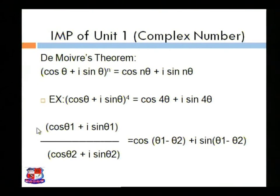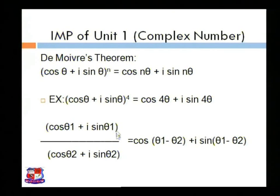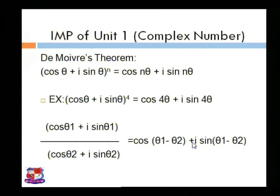If we have division form: (cos theta 1 plus i sin theta 1) divided by (cos theta 2 plus i sin theta 2), we subtract the real part angles and imaginary part angles, giving cos (theta 1 minus theta 2) plus i sin (theta 1 minus theta 2).